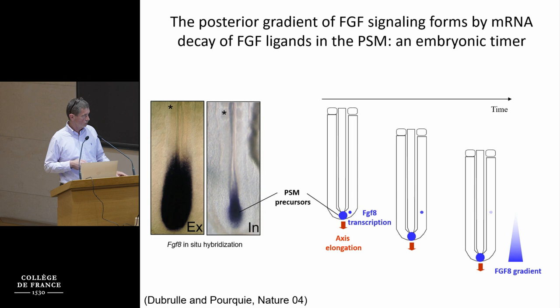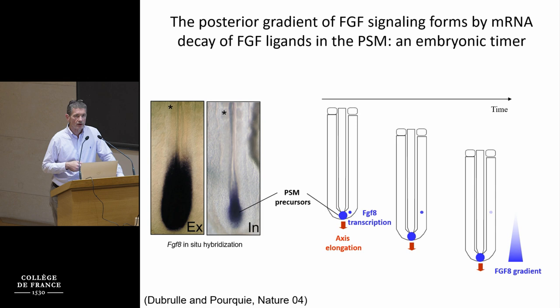You can see this using intronic probes — transcription is restricted to the tailbud, and yet there is plenty of messenger RNA visible with exonic probes in the tissue. When descendants of these NMPs exit into the presomitic mesoderm, they are loaded with mRNA which starts to decay. Because the elongation continues, this establishes a gradient of messenger RNA along the tissue. This is a fairly generic concept applicable to other ligands like Wnt and also to the proteins.